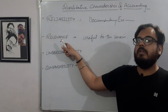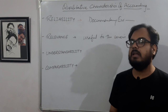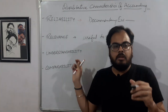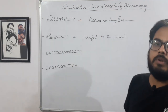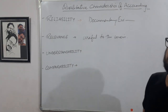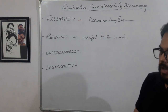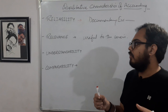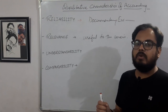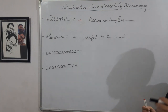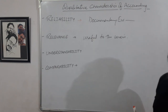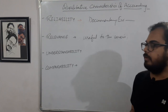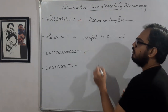Next is Understandability. Accounting information can be easily understandable to the users of accounting information. It can even be easily understood by individuals who have limited knowledge or no knowledge of accounting. It can be simplified so that the accounting information is presented in a way that users of accounting information can understand.